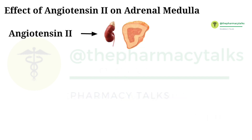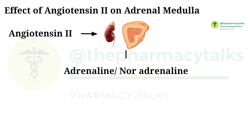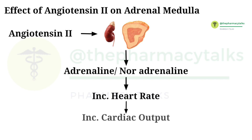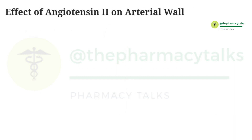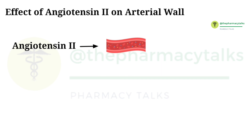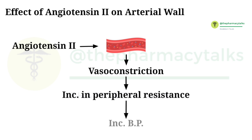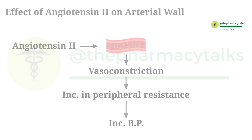In the adrenal medulla, angiotensin-2 evokes a variety of physiological responses. Under stress-like conditions, adrenaline is secreted and released by the adrenal medulla, which raises the heart rate and increases cardiac output, ultimately increasing blood pressure. In arterial walls, angiotensin-2 causes the muscular walls of small arteries to constrict, increasing blood pressure. This is how angiotensin-2 is responsible for hypertension.